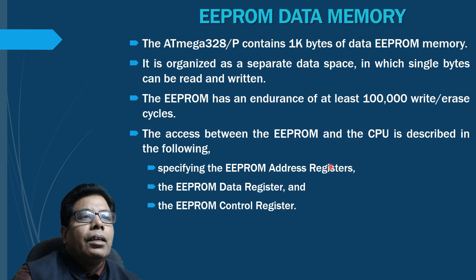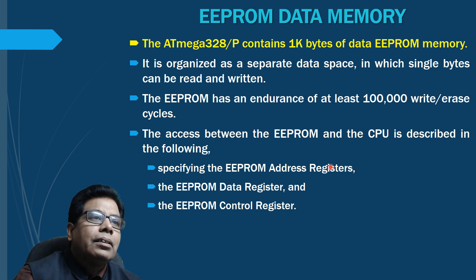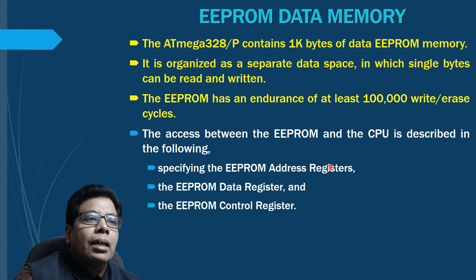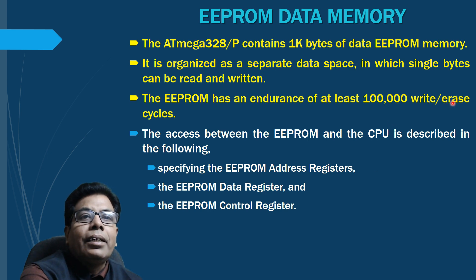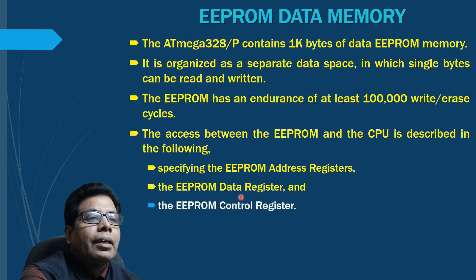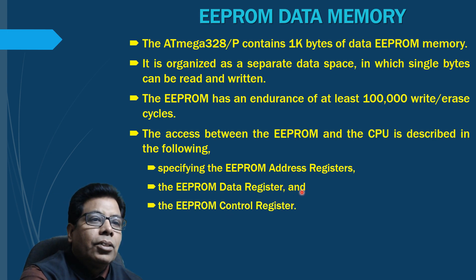The next is EEPROM data memory. The ATmega328P contains 1 kilobyte of data EEPROM (also called E-squared PROM). It is organized as a separate data space in which single bytes can be read or written. The EEPROM has an endurance of at least 100,000 write/erase cycles. The access between EEPROM and CPU is managed using the EEPROM address register, the EEPROM data register, and the EEPROM control register.